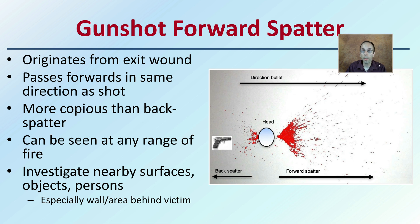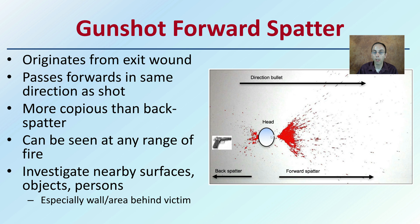The gunshot forward spatter originates from the exit wound — in this case, the head of the individual — and passes forward in the same direction as the shot. It produces more blood than the back spatter and can be seen at any range of fire. Nearby surfaces to investigate include the object, the person, and especially the wall or area behind the victim, depending on the case.